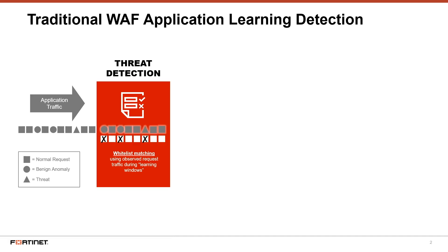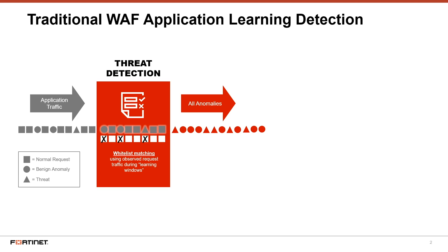The stream is processed by the application learning threat detection engine and compared against previously seen normal activity. If a request doesn't match, then it is flagged as an anomaly. Once flagged, action is taken, usually by blocking the request.